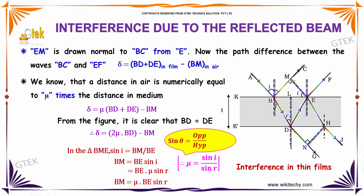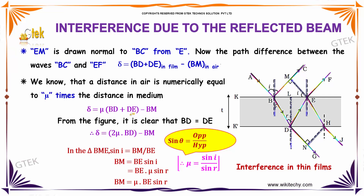We know that the distance in air is numerically equal to mu times the distance in medium. So we get delta equal to BD plus DE minus BM. Since BD is equal to DE, this simplifies to 2 into BD minus BM, or 2 into mu into BD minus BM.